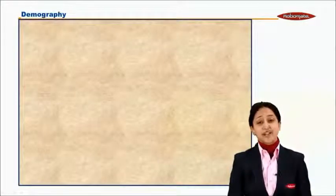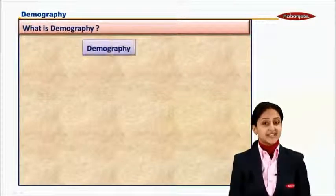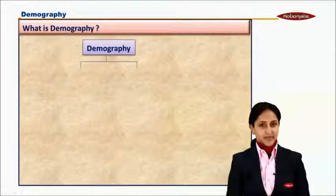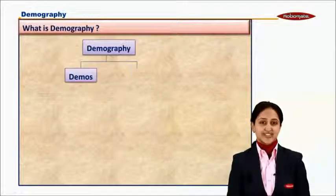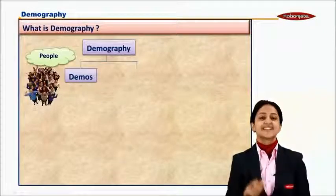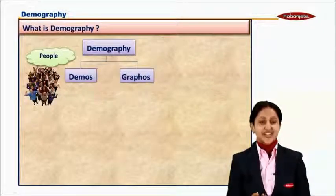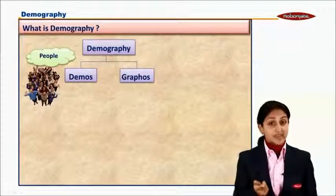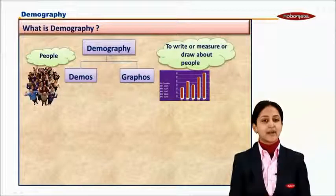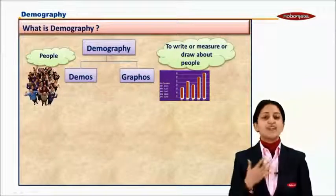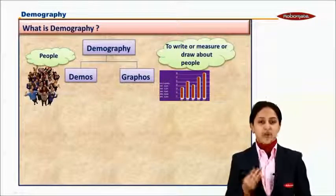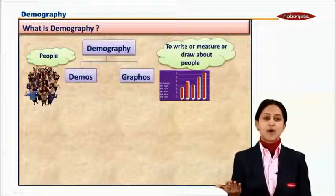We would first be very much interested to know what does demography mean. Demography comes from two Greek words. The first word is demos, meaning people in Greek. The next word is graphos, meaning to measure, to draw, or to write something about people. So demography means to write or to measure something about people.